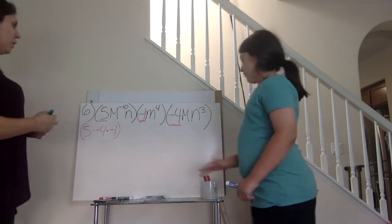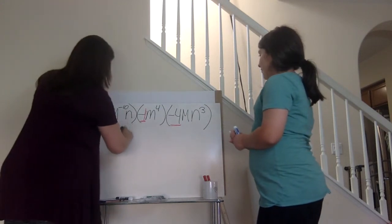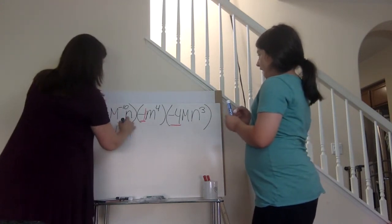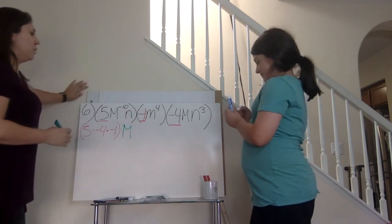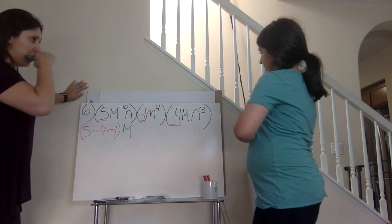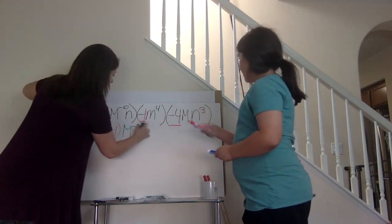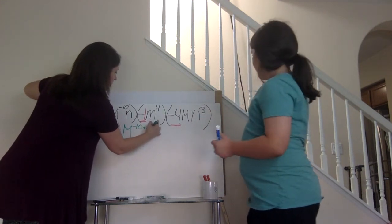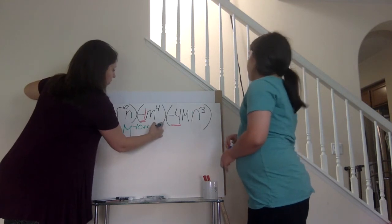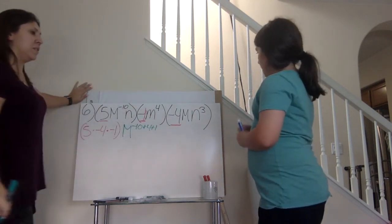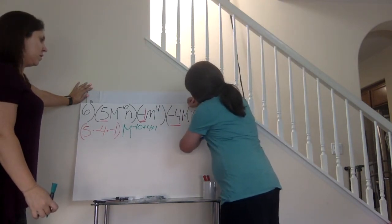What variable do we have in common? The m's — I have an m, a negative m, and another m. So what are my exponents for my m's? First: negative 10. Then positive four. Then positive one — but I don't see a one. There's an invisible one right here.